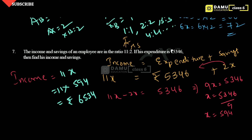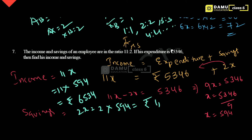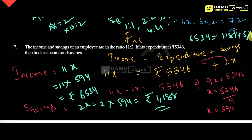Then savings will be equal to 2x, that is 2 into 594, which is 1,188 rupees. To verify: income equals savings plus expenditure, so 6,534 should equal 1,188 plus 5,346. Adding 1,188 plus 5,346 gives 6,534. The answer is confirmed.